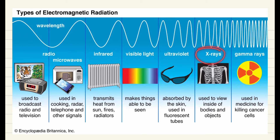Then comes the X-rays. X-rays have very vast medical applications — they are used to view inside bodies and objects. This is the main purpose of the X-rays. And then comes the gamma rays. Gamma rays are basically used in medicine for killing cancerous cells. When we give radiotherapy to a cancer patient, we direct the gamma rays onto the cancerous part and it kills the cancerous cells in the human body.